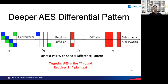The attack can also be extended to round four. Instead of observing a single-byte to single-byte convergence, we consider a case where two columns are active, which leads to two bytes active at the end of the first round, producing a very special pattern in the fourth round. Since the observation is at the fourth round and back-propagating makes the equations more complex, the number of required plaintexts naturally increases. In this case, the number of plaintexts required is 2^{27.5}.